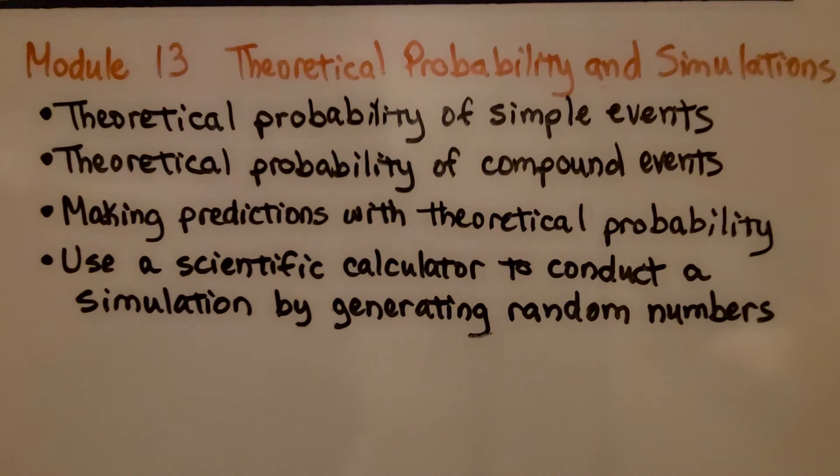In the last module, Module 13, we learned about theoretical probability and simulations. We learned about theoretical probability of simple events and compound events, making predictions with theoretical probability, and using a scientific calculator to conduct a simulation by generating random numbers.